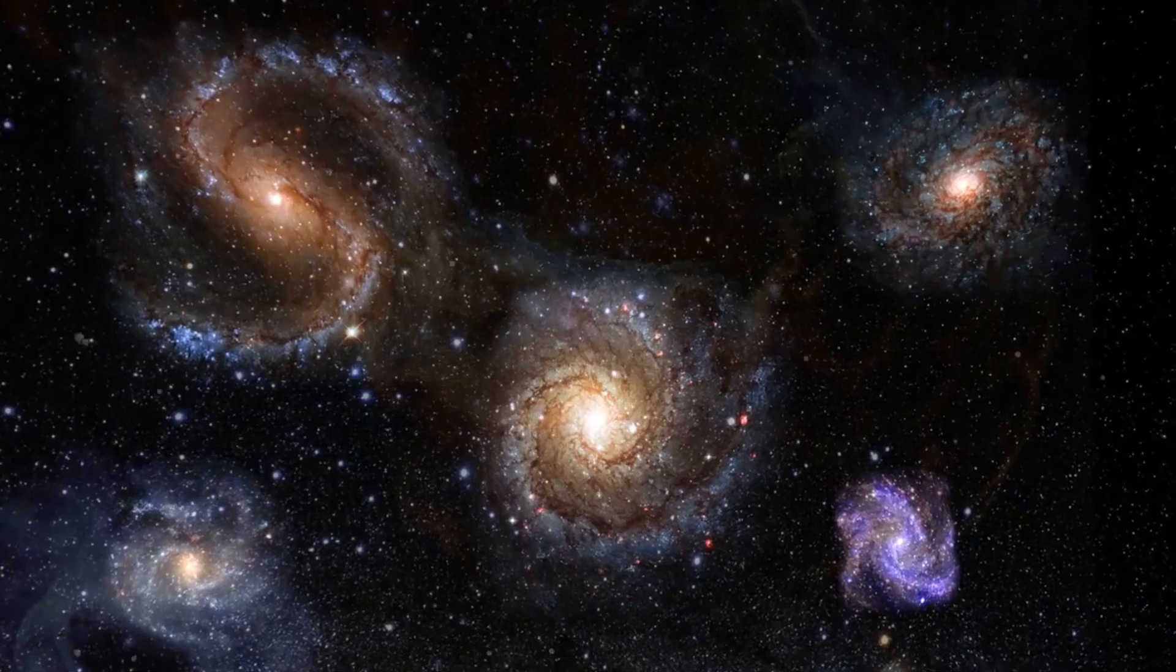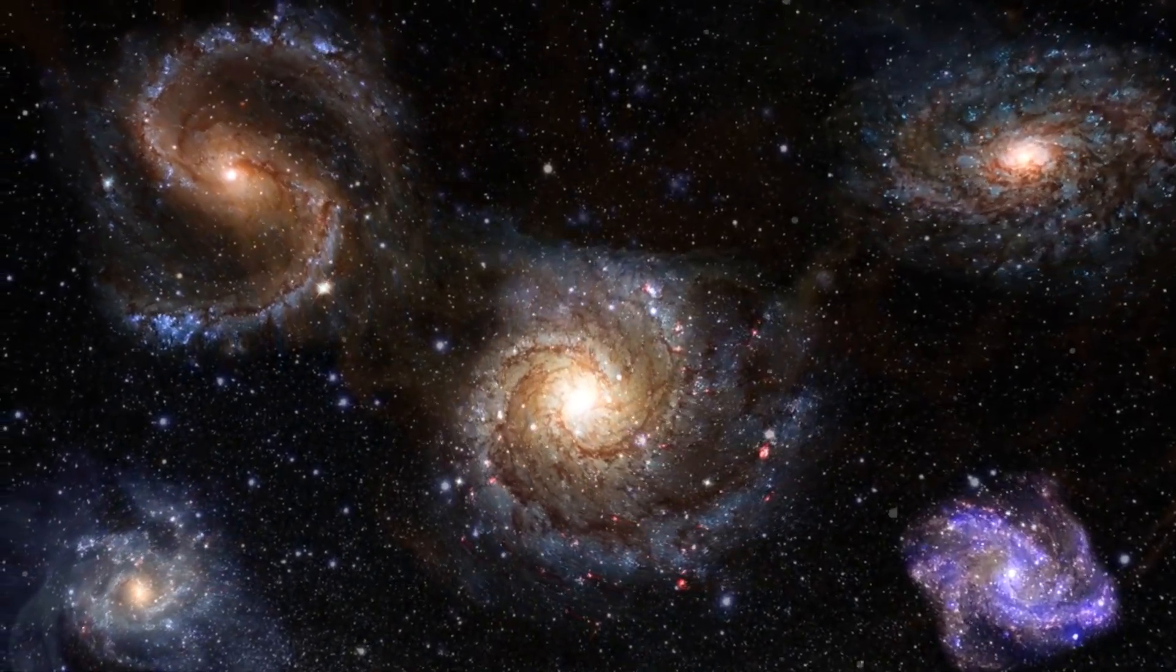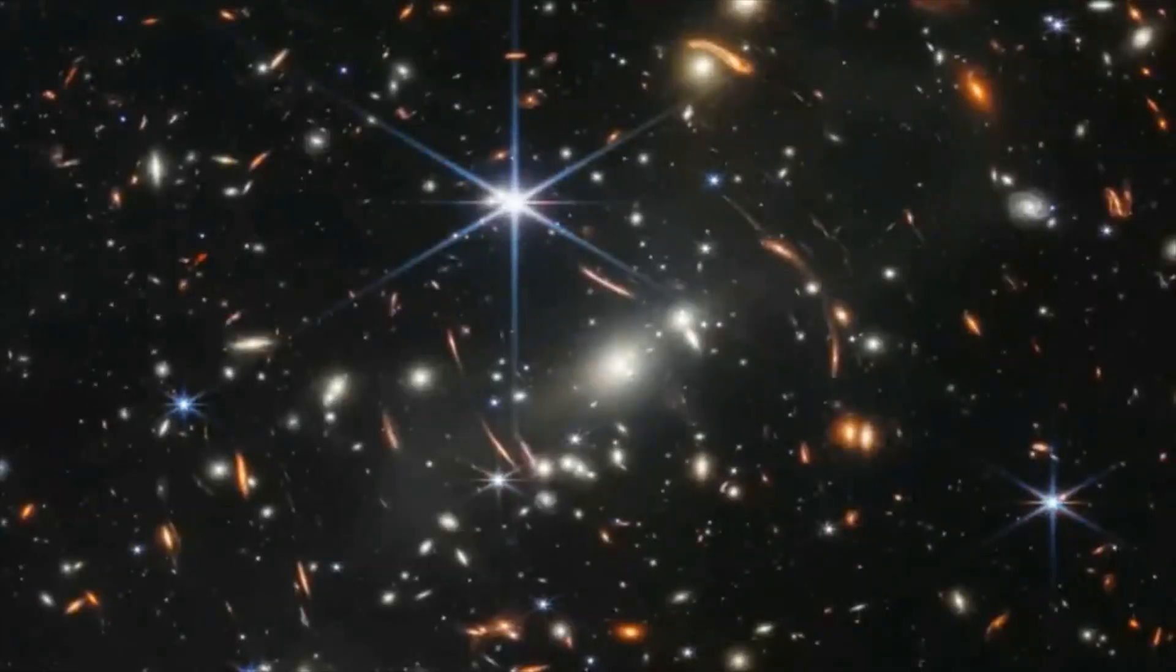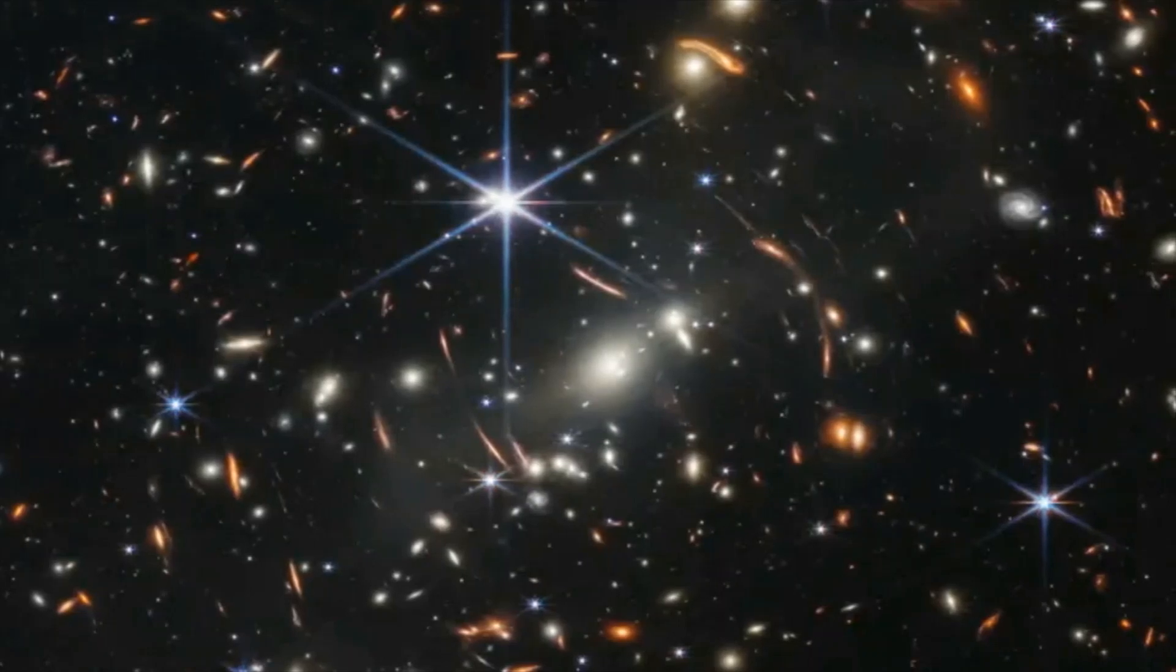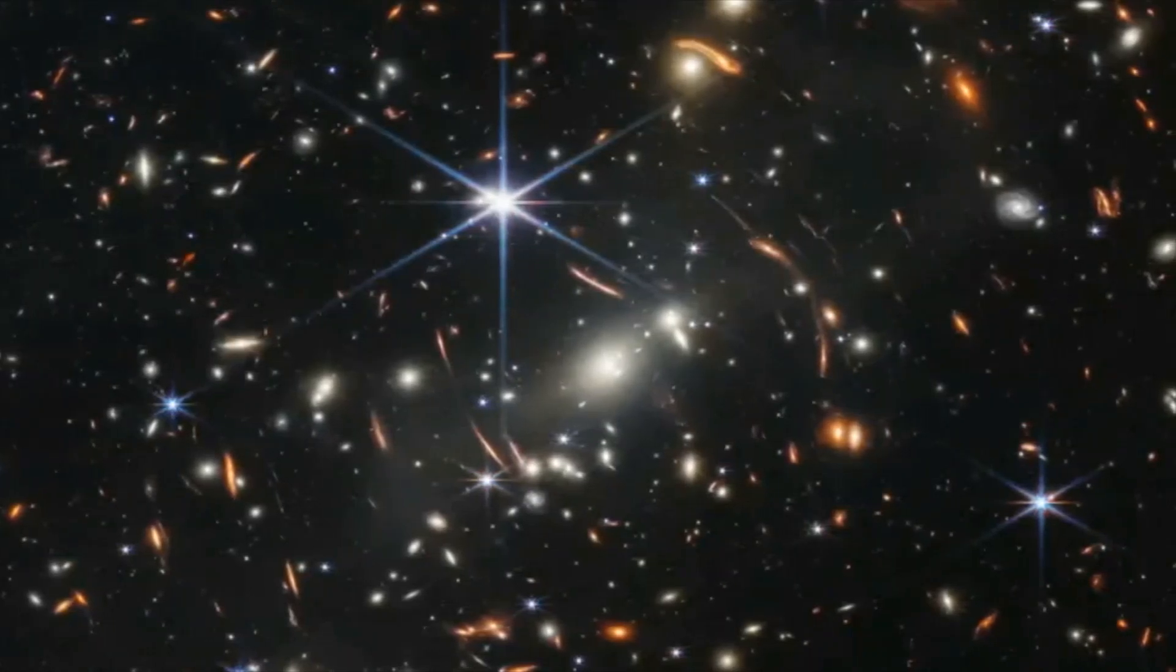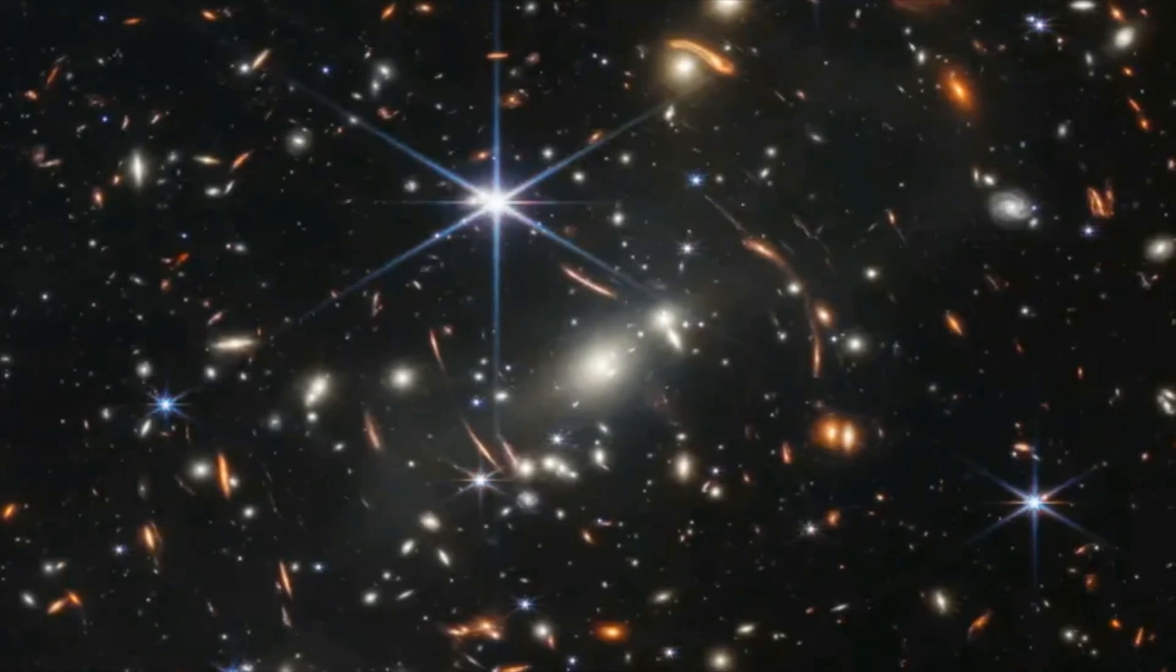Four regions of the sky have so far yielded possibilities for far-off galaxies to astronomers. Some searched the area around SMACS 0723-73, the galaxy cluster shown in the initial web photograph and located in the southern constellation Volans, the flying fish.